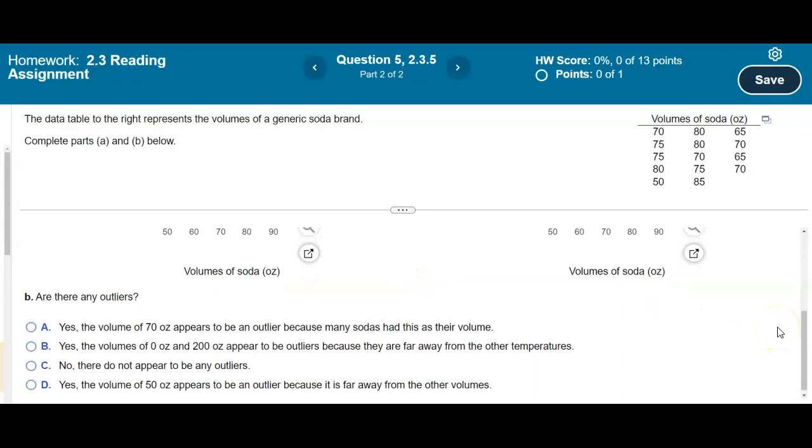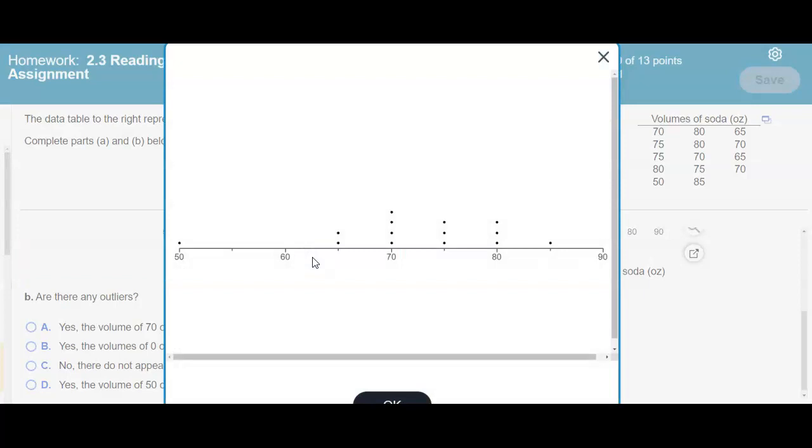Now, the next question says, are there any outliers? Well, how do I determine if there are any outliers? So I'm going to just open up this screen and say, okay, are there any outliers in this particular case?